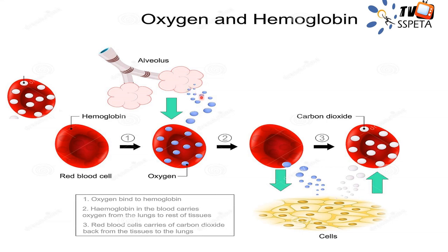To explain it in detail: here is an alveolus. We breathe in air which goes into the lungs and then to the alveolus. Oxygen diffuses out through gaseous exchange. You can see red blood cells picking up oxygen — hemoglobin has a high affinity for oxygen, so it picks it up readily and brings it to the cells. The oxygen then diffuses into the cells, which use it for respiration to produce energy. The byproduct is carbon dioxide.